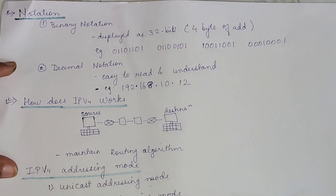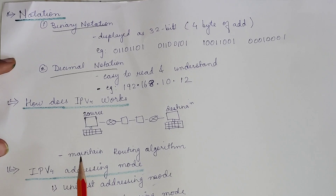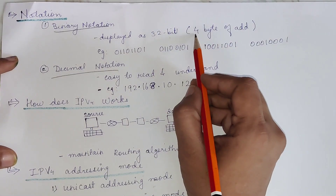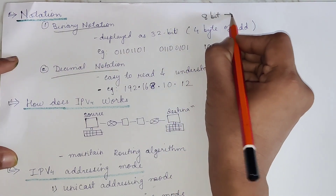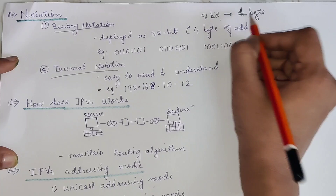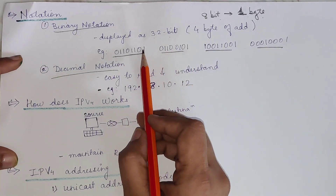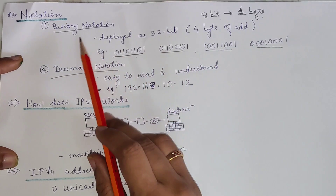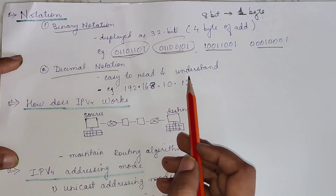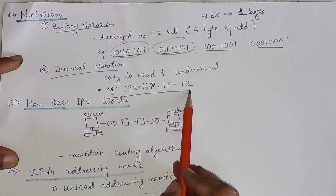There are different notations used for IPv4. The first is binary notation and the second is decimal notation. In binary notation, the 32-bit address is divided into four groups of 8 bits each — each group referred to as one byte or one octet. So there are four bytes: first, second, third, and fourth. We can also express the address in decimal notation, which is much easier to understand and read, as seen in this numeric example.